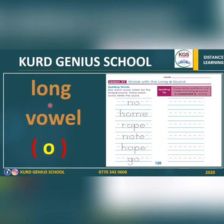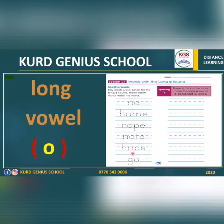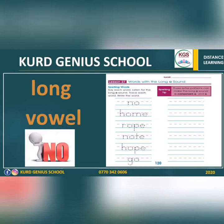Today's topic is long vowel O. We are going to start from page 120. In this page we have only one exercise. It says: each word, listen for the long vowel O, trace each word, write the word. The words on the left side — first we have to read them, then trace them, finally write them on the right side. The first one is 'no.' You see here — no — we have the long vowel O after the first letter.